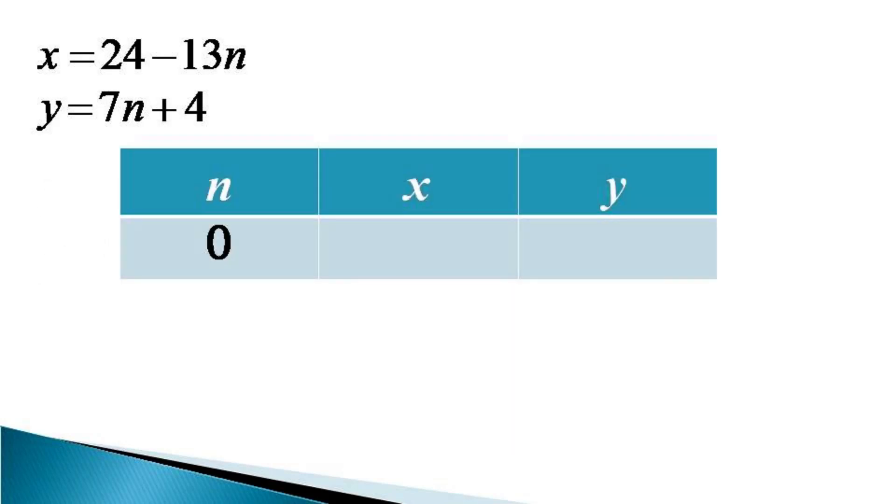For n = 0, x becomes 24 and y becomes 4. For n = 1, x becomes 11 and y also becomes 11. For the value of n equal to or greater than 2, x becomes negative. So all the values equal to or greater than 2 are also discarded for n. This way we get the solution of the given equation as x and y being 24 and 4, or 11 and 11. We can verify these values against this equation.